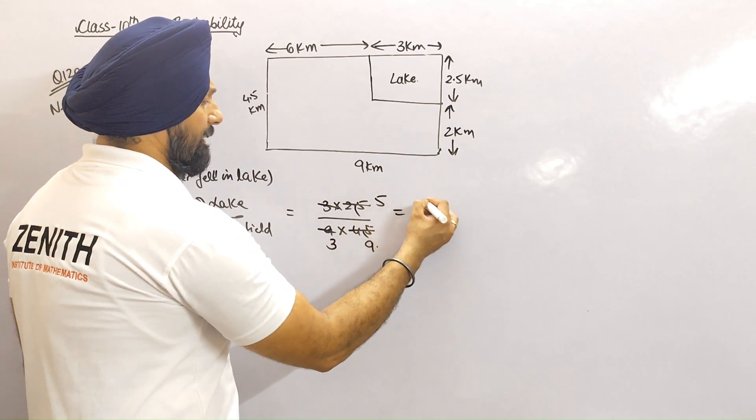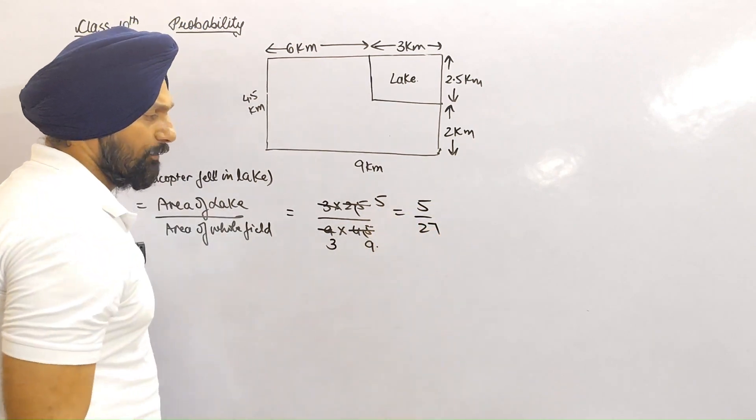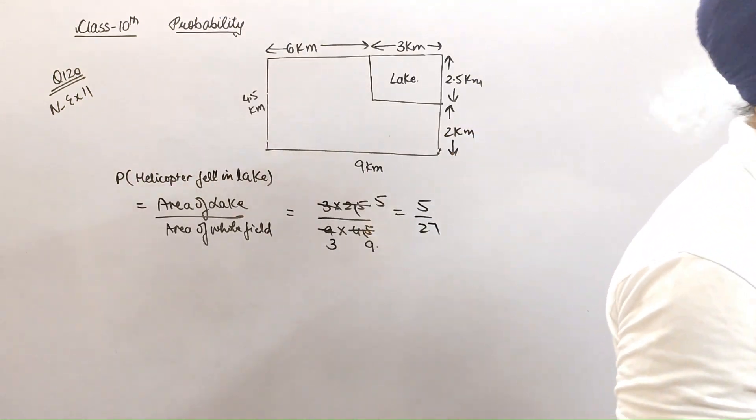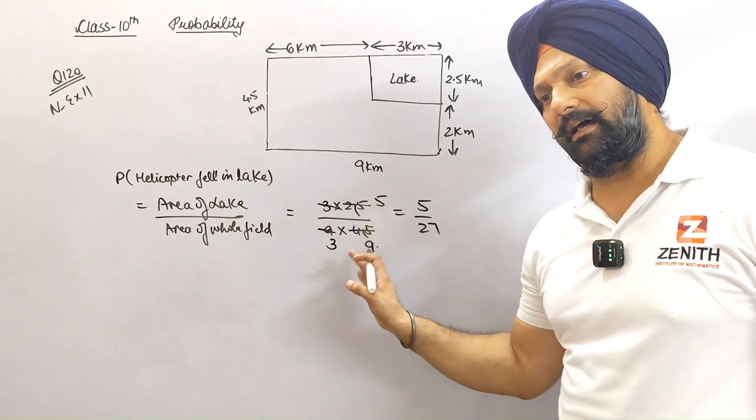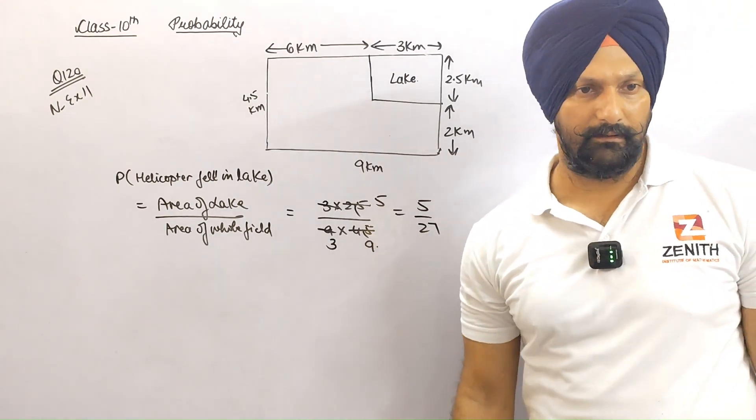So what is the probability that it fell inside the lake? It is 15/27. Do it!